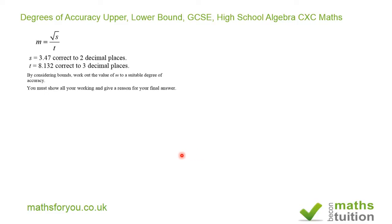Now firstly I need to establish the bounds for S and T. For S we have the bounds between 3.465 because when you approximate that to 2dp you get 3.47, and 3.474999 which approximates to 3.475.